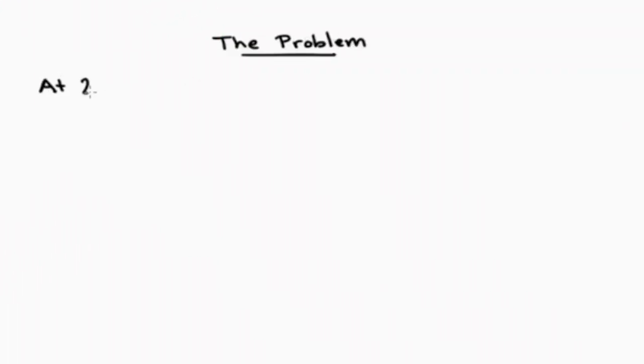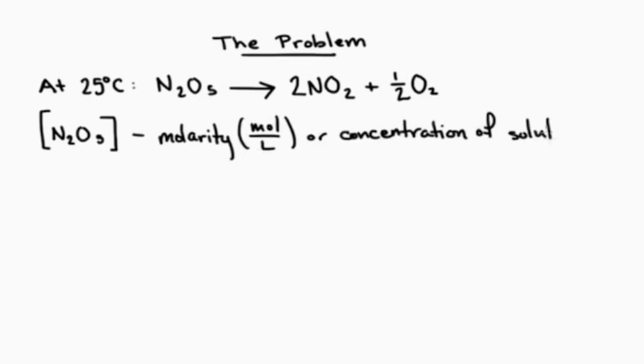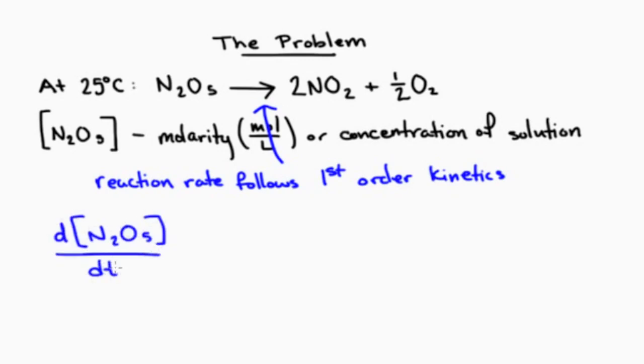The problem is that N2O5 decomposes into NO2 and O2 at room temperature. If the molarity of the solution has changed significantly, it might ruin your experiments. Experiments have shown that the rate of decomposition follows first order kinetics. This means that the instantaneous rate of change in concentration of N2O5 is proportional to the concentration of N2O5. The constant of proportionality k has been found experimentally to be 1.72 × 10^-5 inverse seconds.